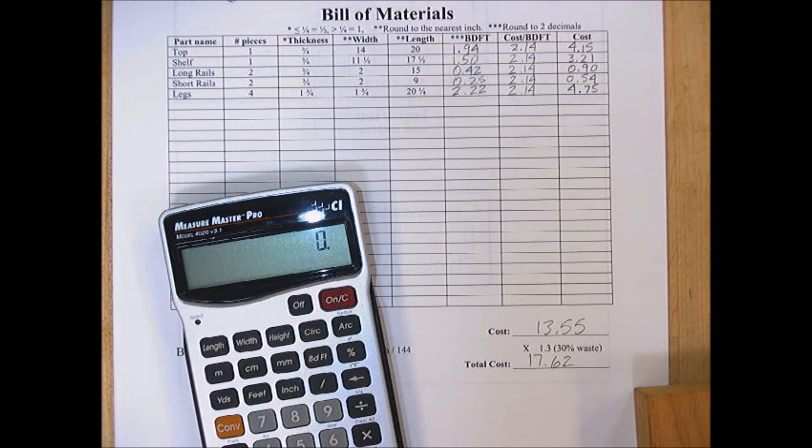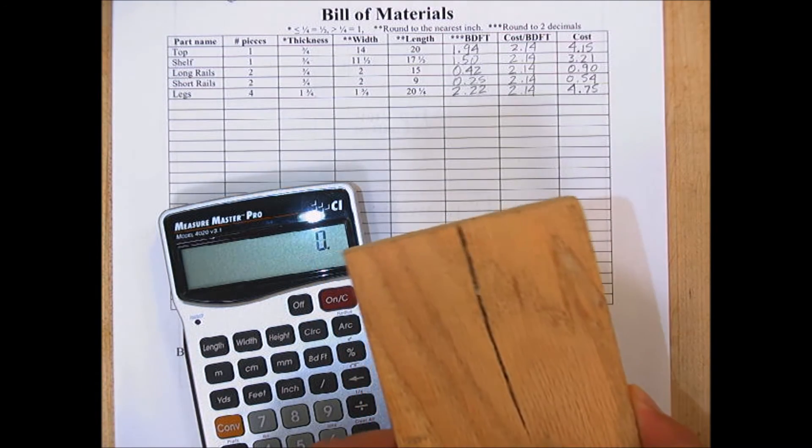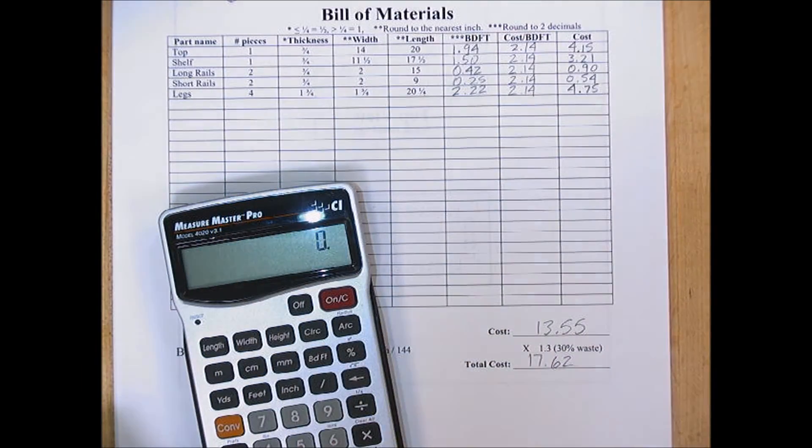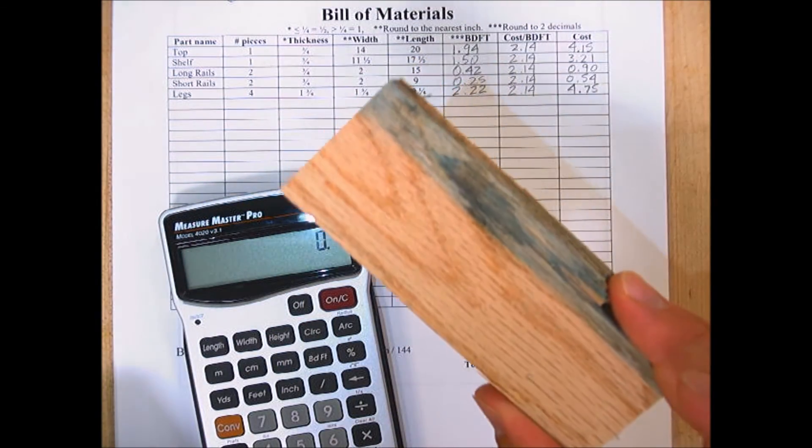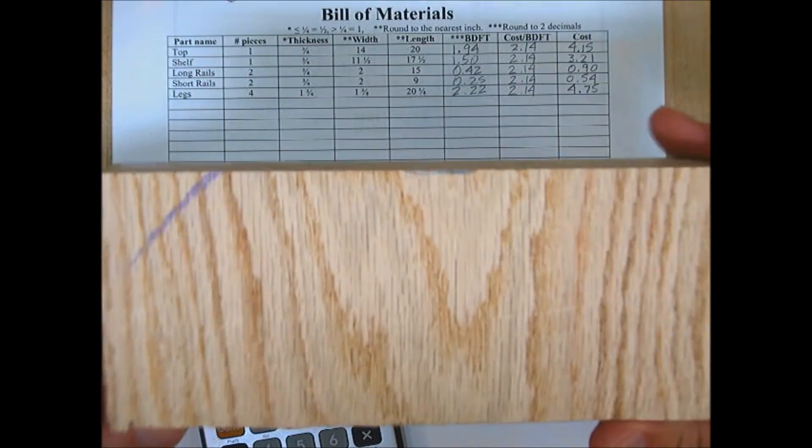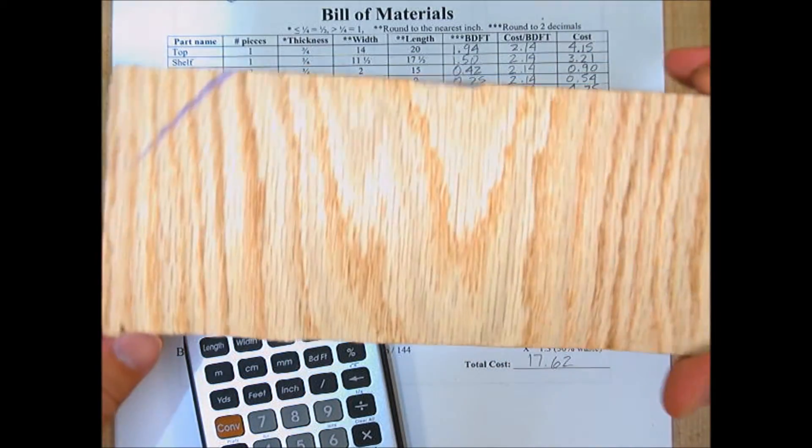Well waste consists of several things. First is the defects that you'll need to cut out but you still had to pay the lumber mill for. This includes splits, knots, wane, and discoloration. Next is unusable scrap that gets cut off as you cut your parts to size, like this end of a board that's now unusable.